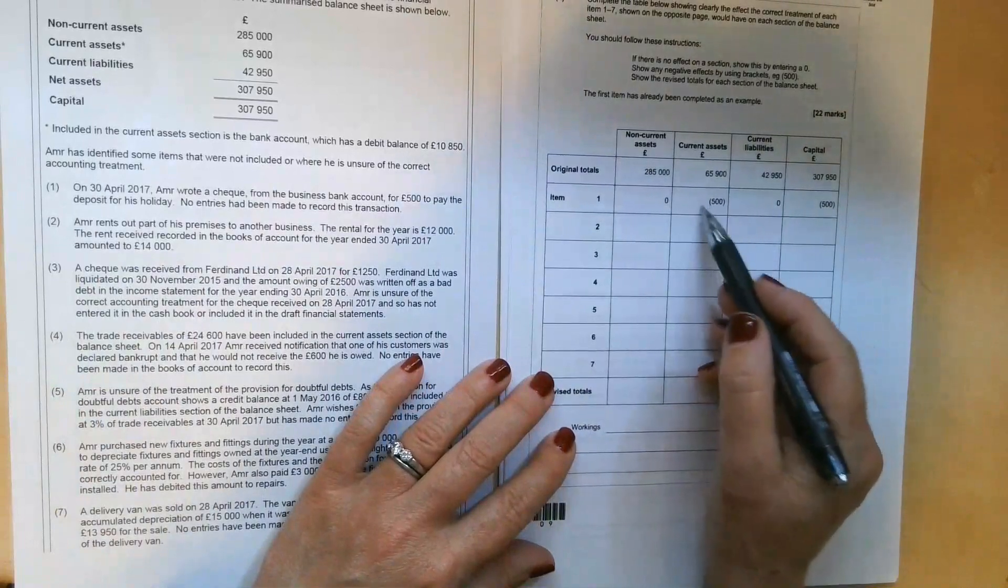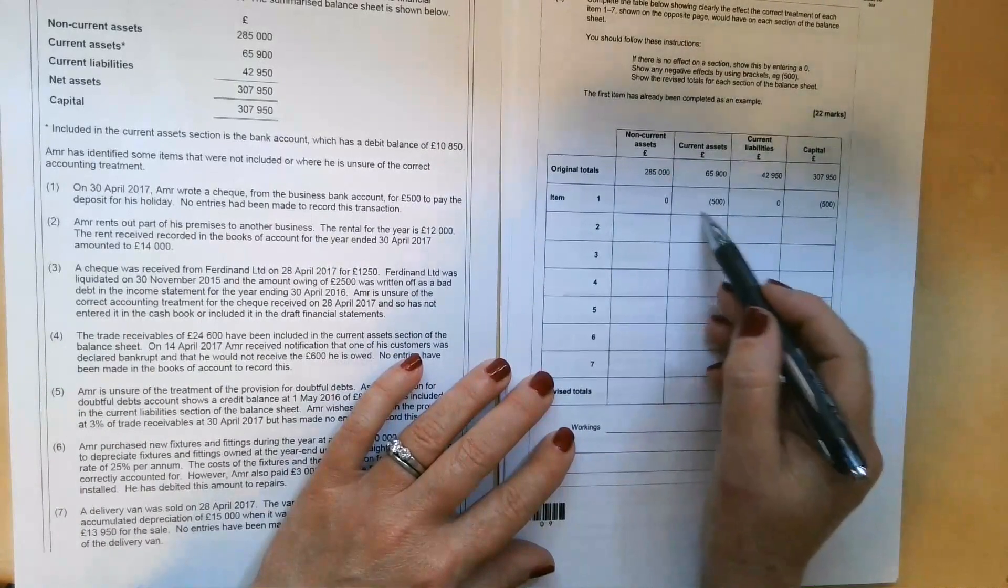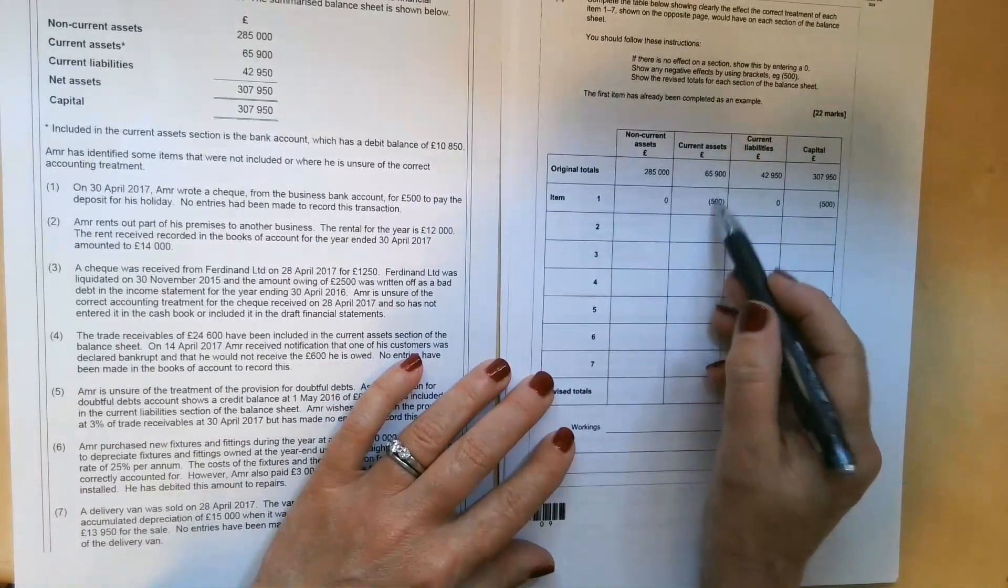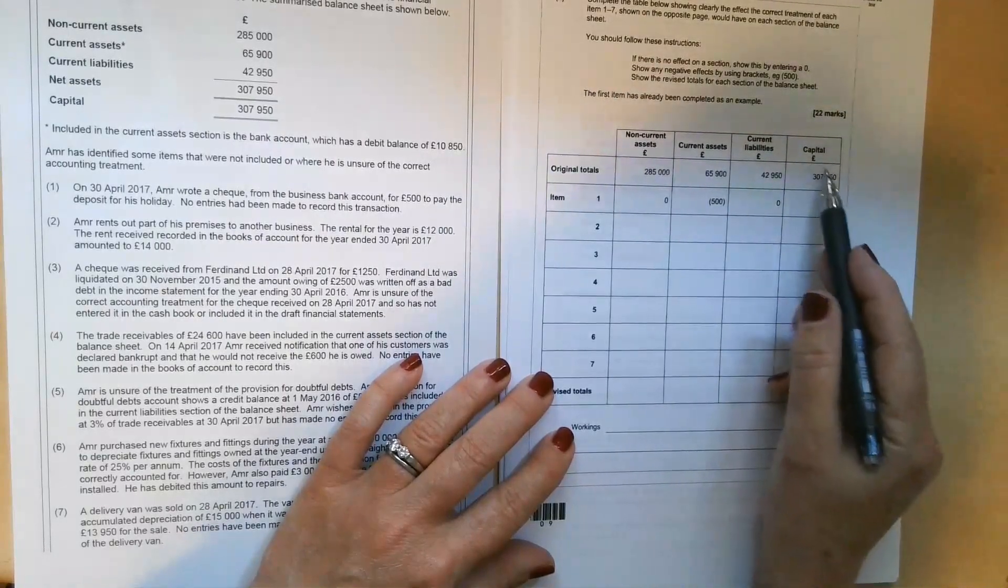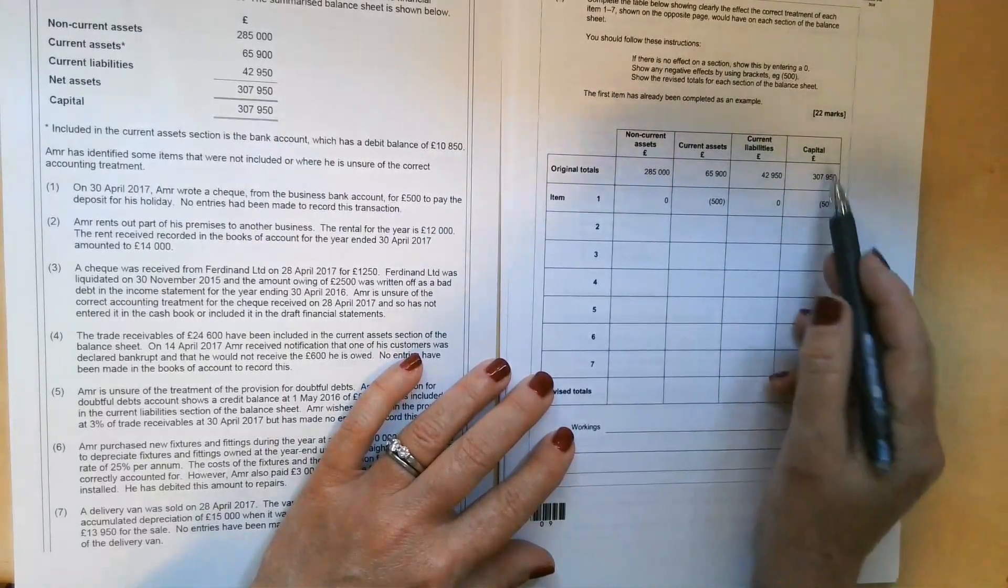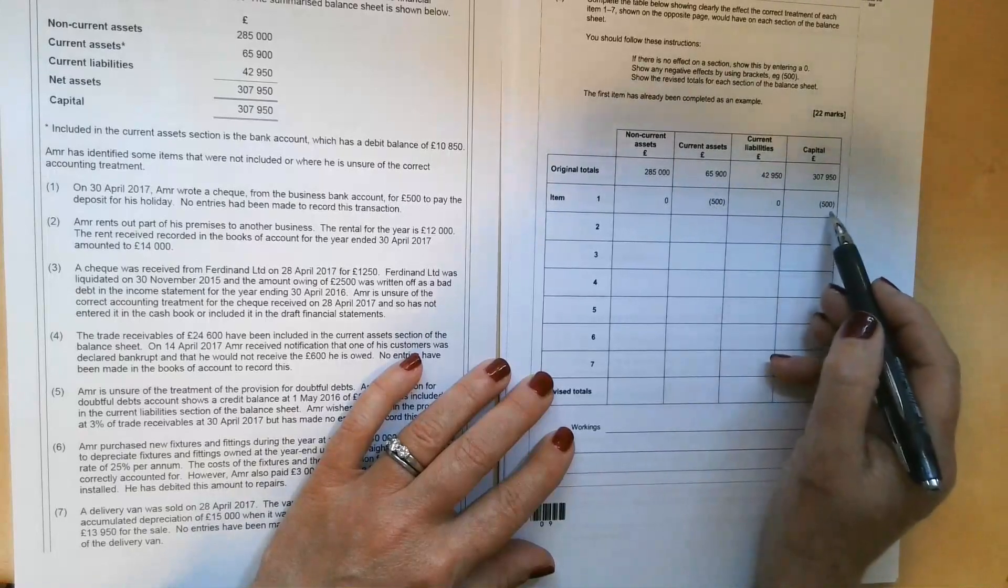Therefore, they've already done this one for us. But it's always good to just check that you understand the logic that's been applied. So £500 is coming out of the bank account. That's why there's a deduction to current assets. There's also a deduction over here on the capital account, because he's taken drawings.